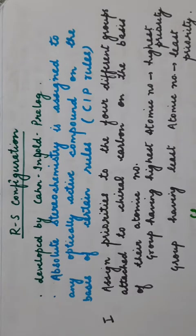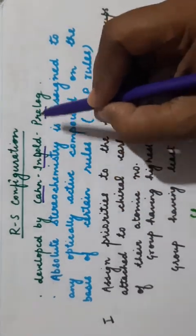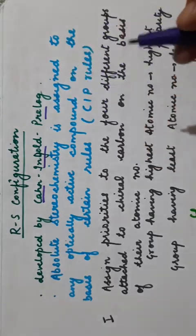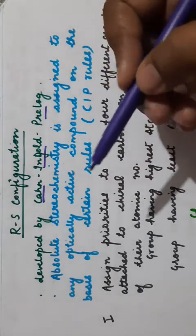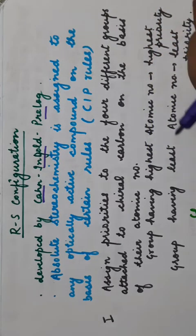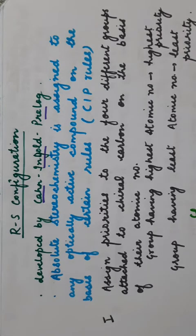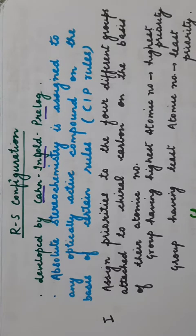RS configuration was developed by Cahn, Ingold, and Prelog — three scientists who together developed this system. They defined the absolute stereochemistry of a compound. Every stereoisomer has a definite arrangement of atoms or groups around it in space, and this definite arrangement which characterizes a particular stereoisomer is called its configuration. They gave an absolute configuration based on the RS system, governed by certain rules known as CIP rules.